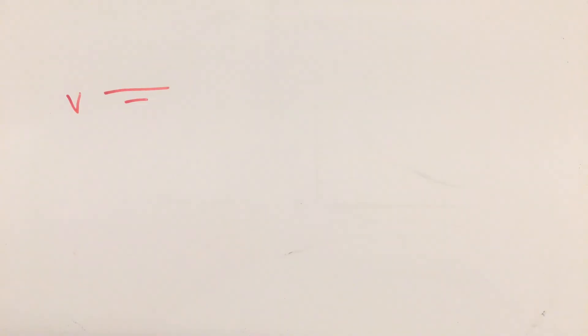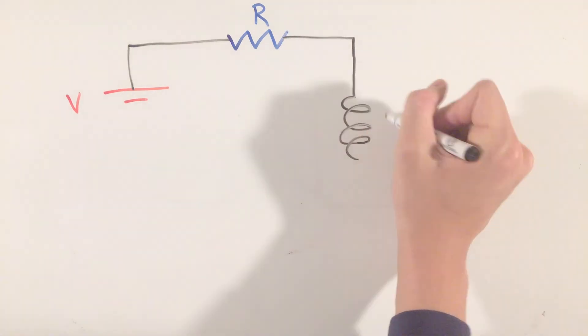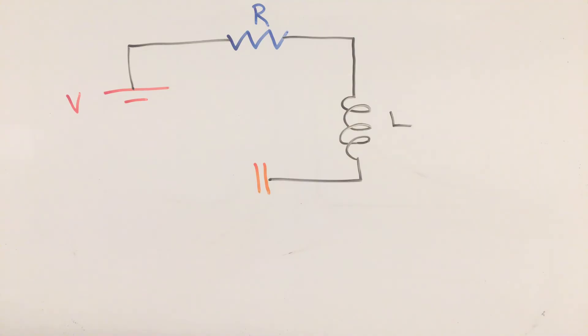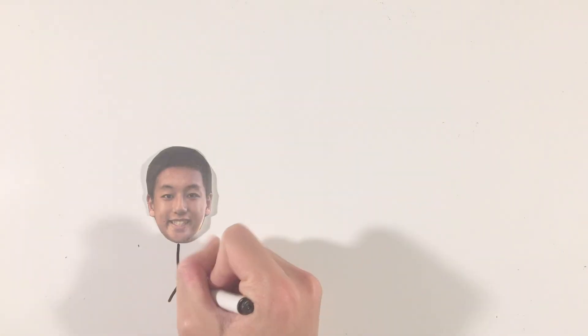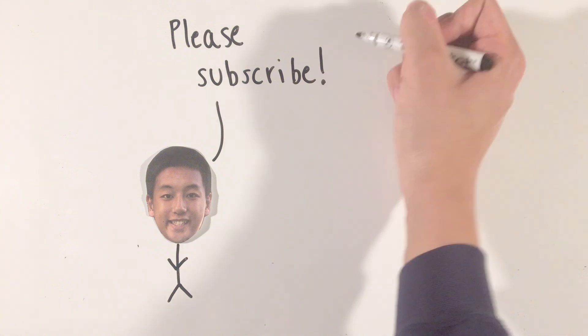While RC and RL circuits have countless combinations and arrangements, the process of writing Kirchhoff's loop rule and applying background knowledge is all that's needed to arrive at the related equations and graphs. While there also exist LC and RLC circuits, with new quantities like impedance, those will be the topic of a future video. For now, you can feel good that you've just finished learning about RC and RL circuits.